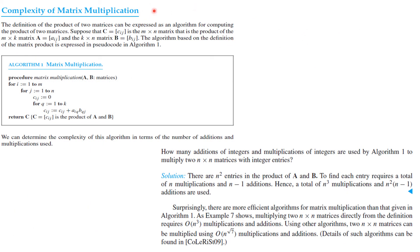Let's talk about the complexity of matrix multiplication. You multiply matrices by taking elements of a row times elements of a column and adding them, so both multiplications and additions are performed. This is the matrix multiplication algorithm: for each entry C[i,j] in the product A×B, you initialize to 0 and accumulate A[i,q] × B[q,j]. We can determine the complexity in terms of both the number of additions and the number of multiplications used.